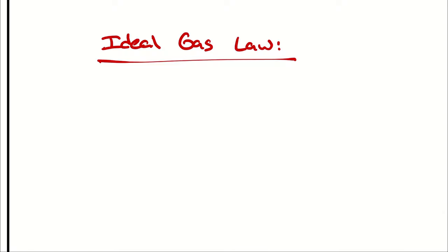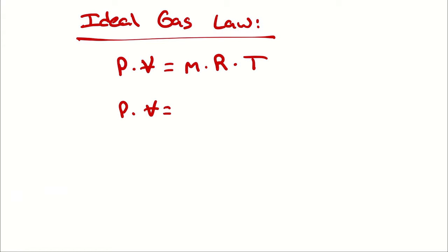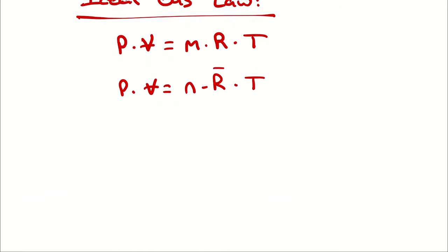When I write out my ideal gas law, I'm going to write pressure times volume equals mass times specific gas constant times temperature: PV = mRT. The more common form PV = nRT uses number of moles and the universal gas constant. That form is most useful in chemical applications. In our case, mass is more useful since this is primarily a thermometric analysis, so the mass form is more convenient. They are equivalent because the specific gas constant for any substance equals the universal gas constant divided by the molar mass for that substance.